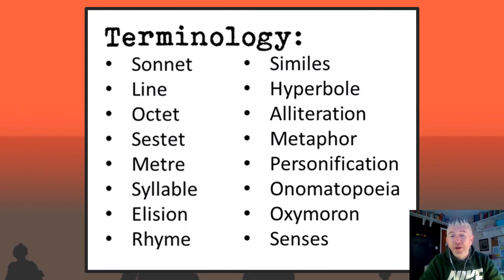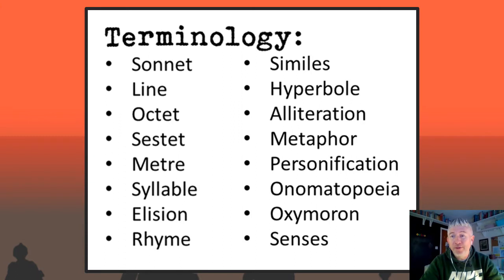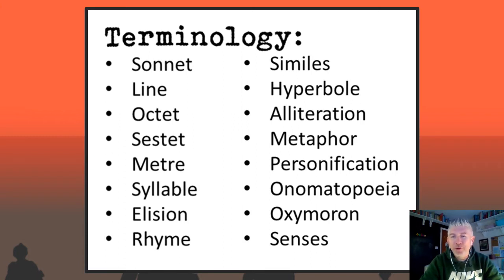Here is a list of terminology — these are the ones we've been looking at over the course of the last couple of lessons. You've also got to think about punctuation as well, that could be a feature you want to draw on, and obviously the basics: nouns, verbs, adjectives, adverbs and parts of speech like that. This list on the screen is very useful but don't forget the basics — you can talk about punctuation, nouns, verbs, adjectives, adverbs, etc. as well.